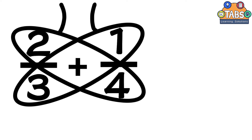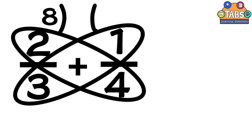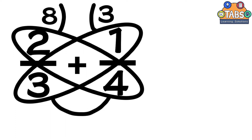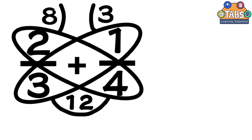Second, multiply the numbers in each wing and write the answer under the antenna. That is 4 times 2, which equals 8, and 3 times 1, which equals 3. Then multiply the two denominators to get the denominator of the result: 4 times 3 equals 12.